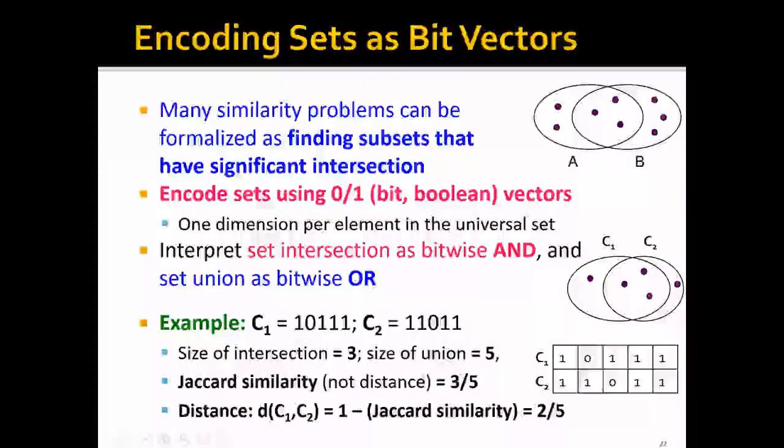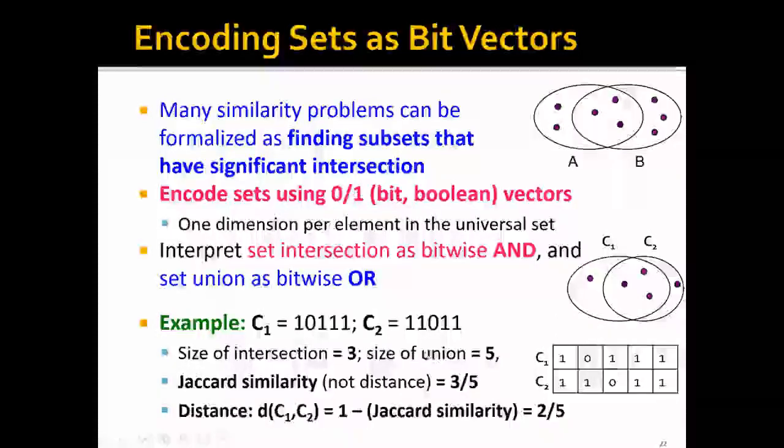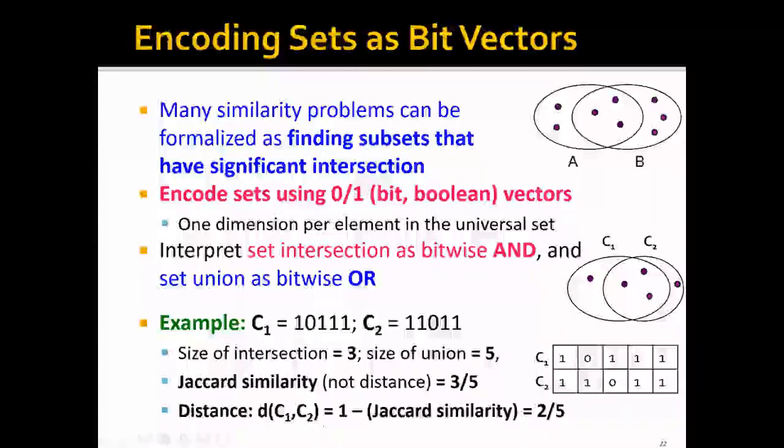So the size of intersection would be 3. And of course, the size of union would be 5, because all of them would be 1. So the Jaccard similarity would be 3 over 5, and the distance would be 1 minus 3 over 5, which is 2 over 5.